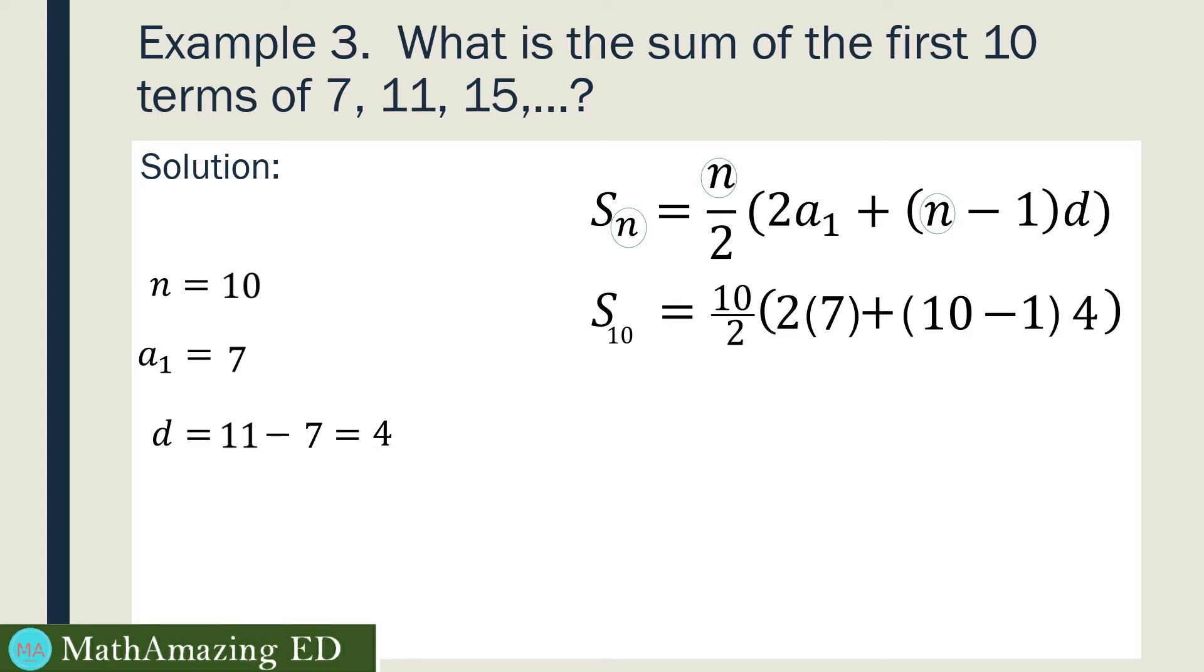Then perform the indicated operation. For the first one, 10 divided by 2 is just 5. Next, multiply 2 and 7. We have 14. And then, 10 minus 1 is 9 times 4. 9 times 4 is 36. So we have it there. And then the last step would be add 14 and 36. So we have 50. 50 times 5 would be 250. So in other words, our S sub 10, or the sum of the first 10 terms, is equal to 250.